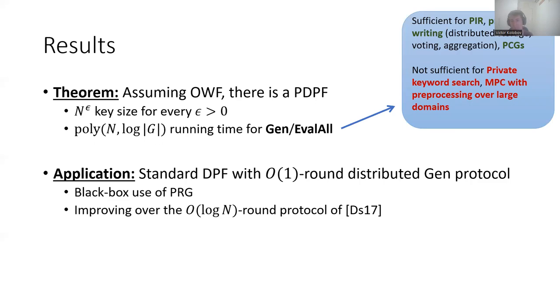Also, as an application, we construct a standard or non-programmable DPF with constant round distributed Gen protocol, which only makes black box use of a PRG. And this improves over the O(log N) round protocol of Doerner and shelat.